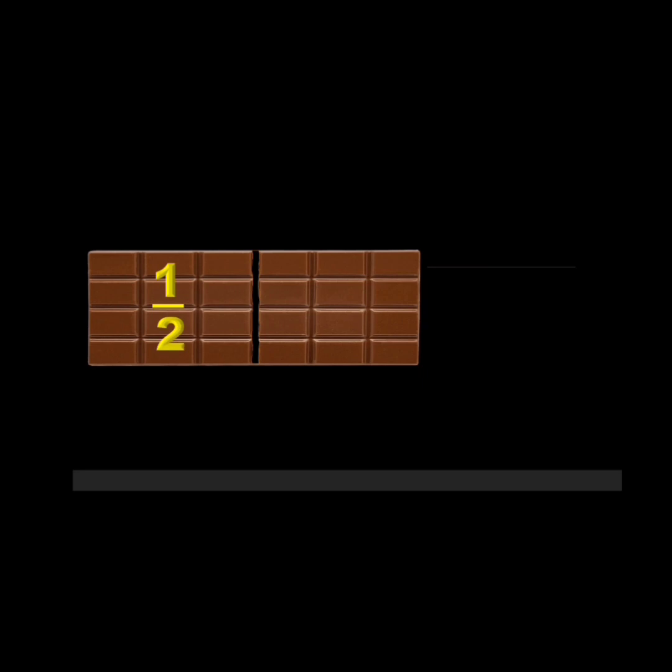Here we take one chocolate bar and divide it into two equal parts. When we divide the total chocolate bar into two equal halves, each part is one half. Now what is the sum? When we take the sum of these two halves, we are getting one whole, and that's equal to 2 upon 2.